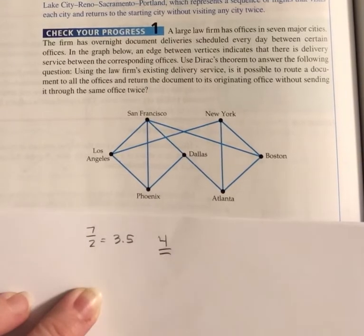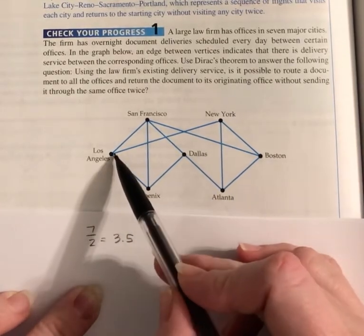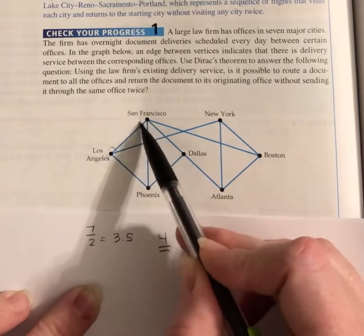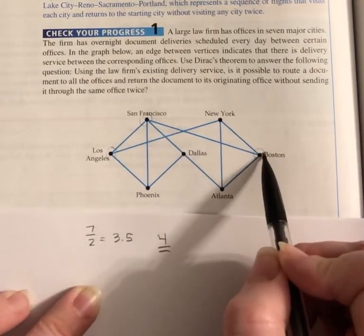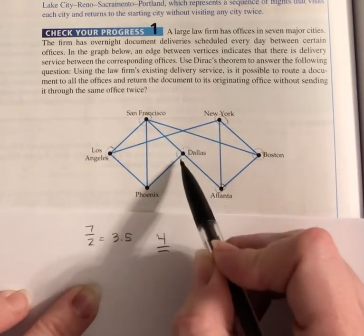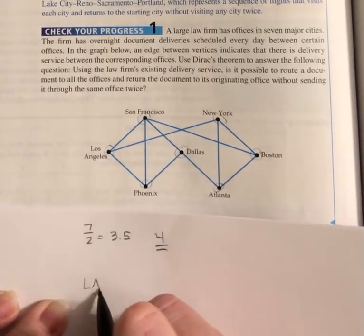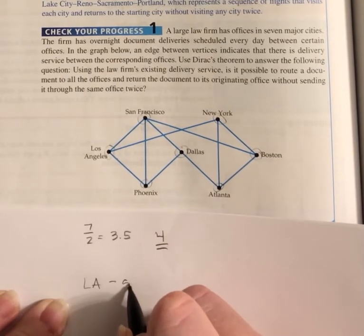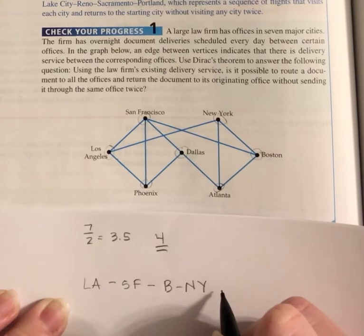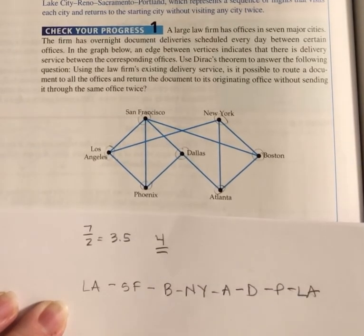So we take a look at what we have. I'm going to start in Los Angeles. If I go Los Angeles to San Francisco, then San Francisco to Boston, Boston to New York, New York to Atlanta, Atlanta to Dallas, Dallas to Phoenix, Phoenix to Los Angeles — there's my Hamiltonian circuit. So I went Los Angeles, San Francisco, Boston, New York, Atlanta, Dallas, Phoenix, and back to Los Angeles.